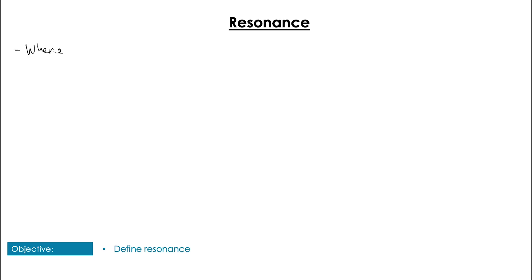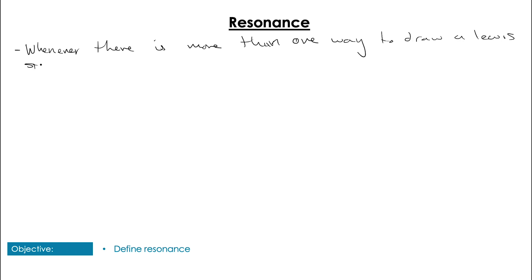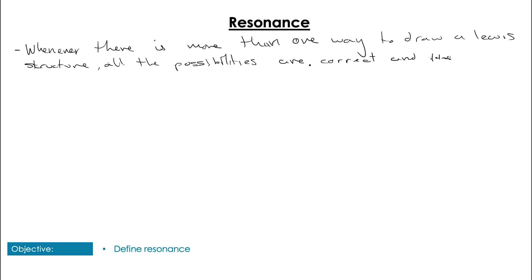So what is resonance? Well, whenever there is more than one way to draw a Lewis structure, there are multiple possibilities and resonance posits that all of these possibilities may in some way be true and the molecule oscillates backwards and forwards between them at an incredibly high rate, but still oscillates between these reasonable structures.